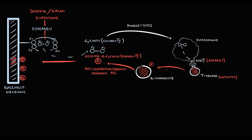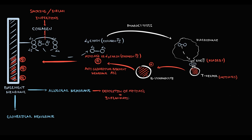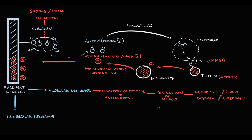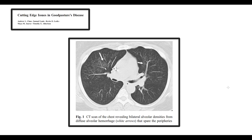In the alveolar membrane, deposition of autoantibodies causes significant inflammation, resulting in destruction of alveoli. Massive alveolar destruction causes clinical symptoms such as hemoptysis, cough, dyspnea, and chest pain. On lung CT in patients with Goodpasture syndrome, we can see bilateral alveolar densities caused by destruction of alveoli, which in turn cause massive alveolar hemorrhage.